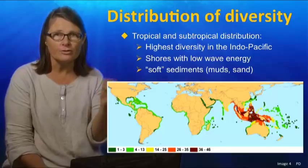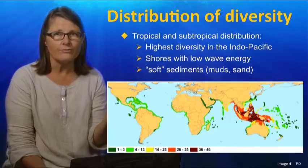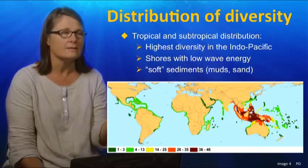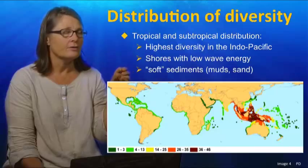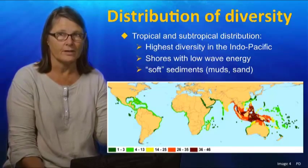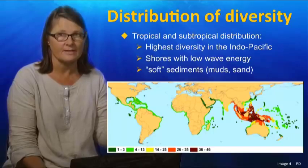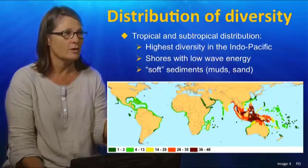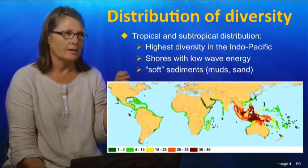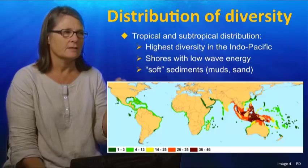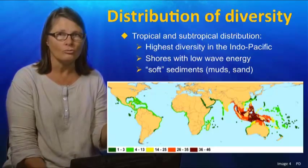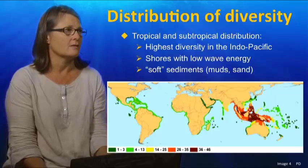The diversity of mangrove forests is highest in the tropical regions, with more species there than in the more temperate or sub-tropical regions of their distribution. Most species are centred in the Indo-Pacific region, which is a similar pattern to coral reefs and seagrasses.